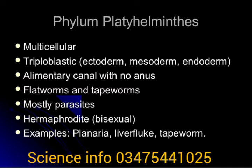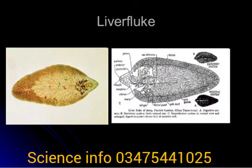Their size ranges from 10 millimeters to several meters. They have a sac-like digestive system, and some species have it absent. The excretory cells are called flame cells, and they have no respiratory or circulatory system.